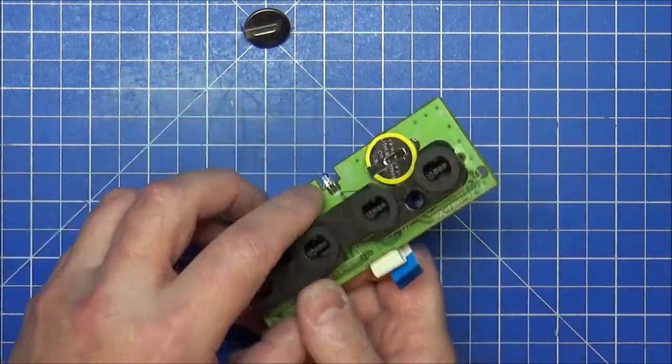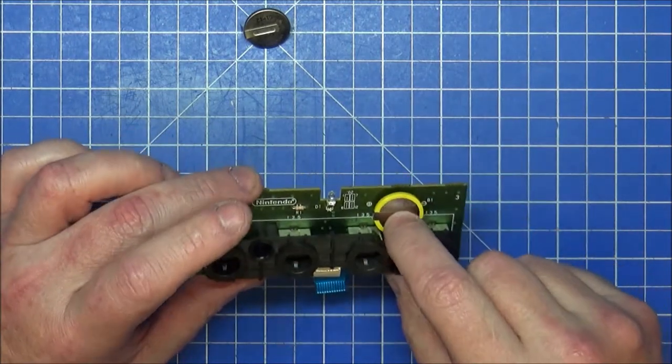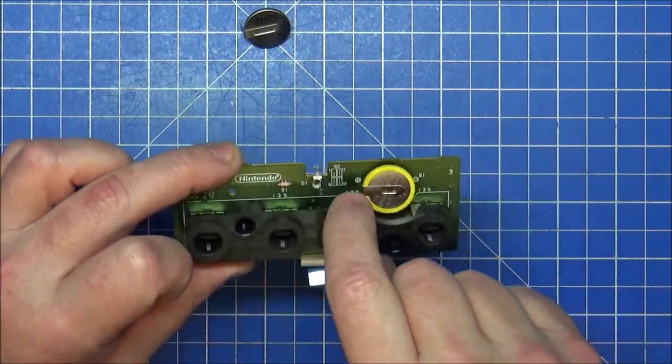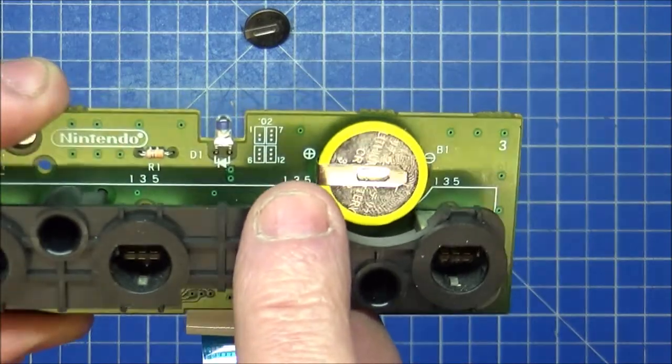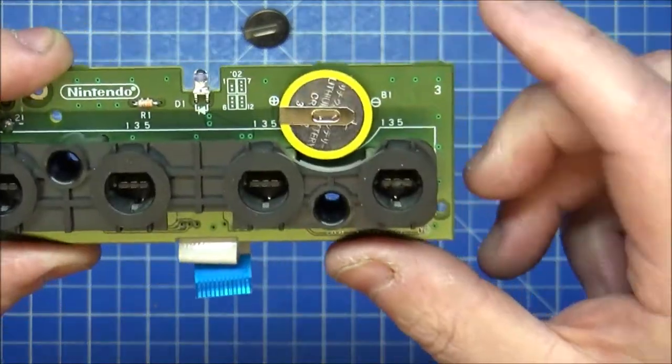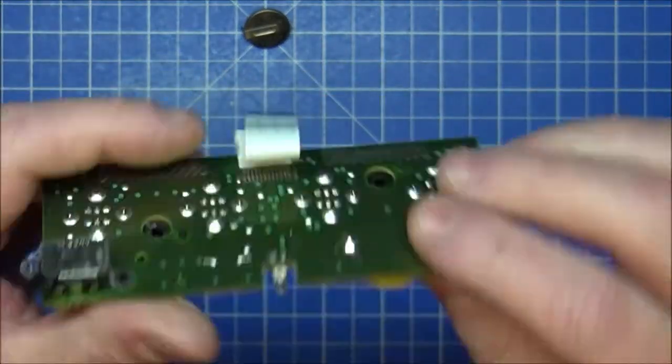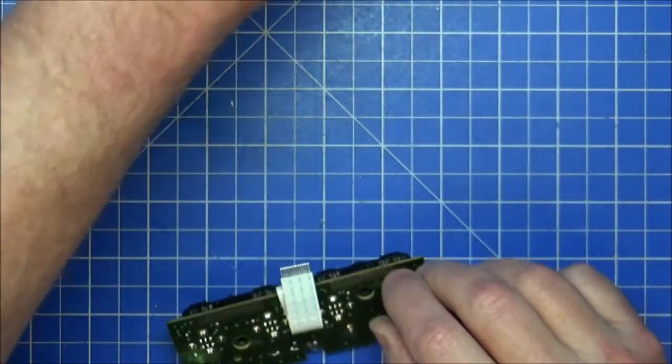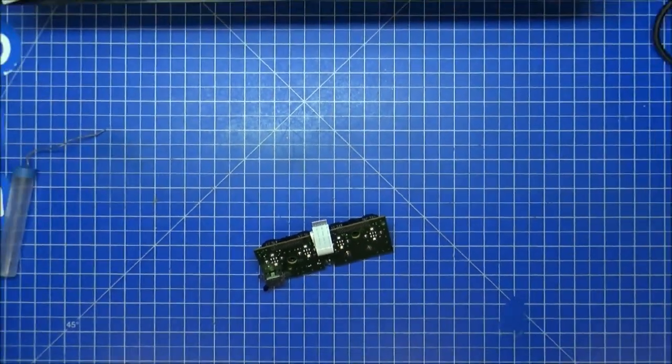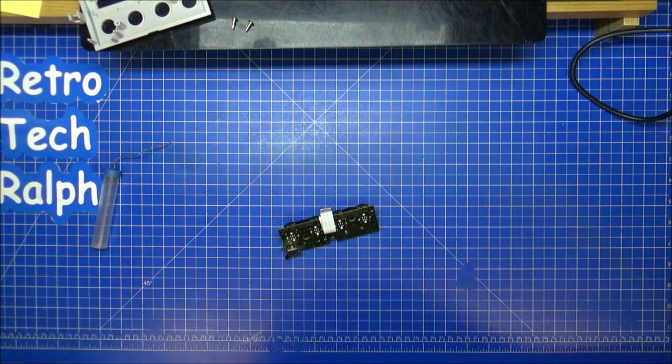There we have a new battery on the right way around, because positive is the top on here, which goes into the positive part there. As you can see, negative is underneath, soldered in quite nicely. Now, it's a simple reverse of what I've just done with the dismantling. So I'll show you that now.